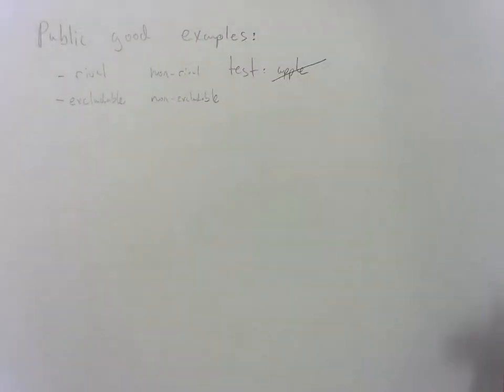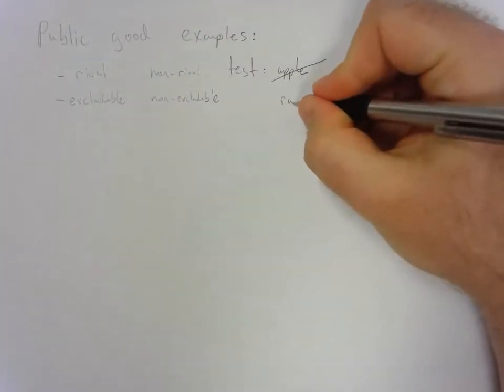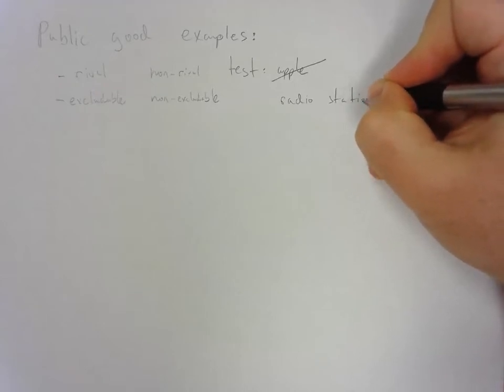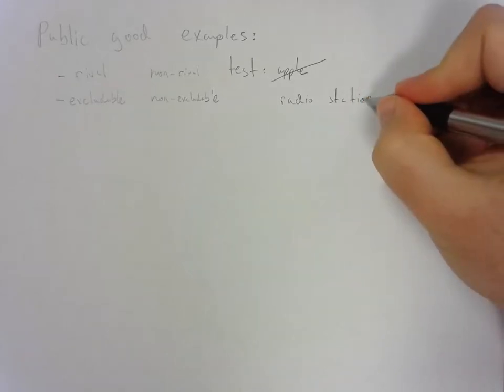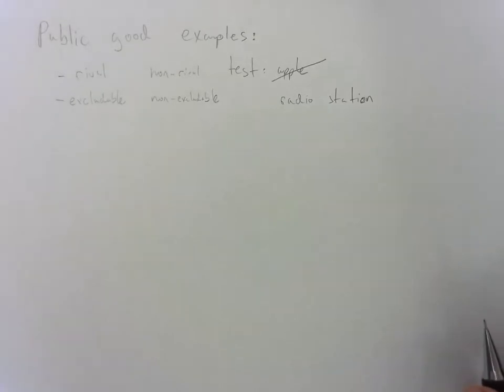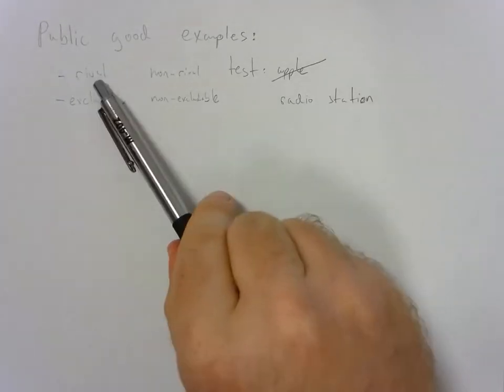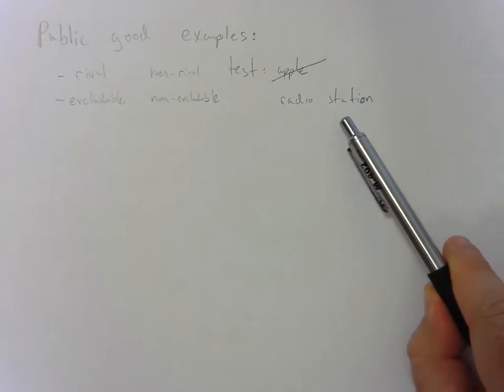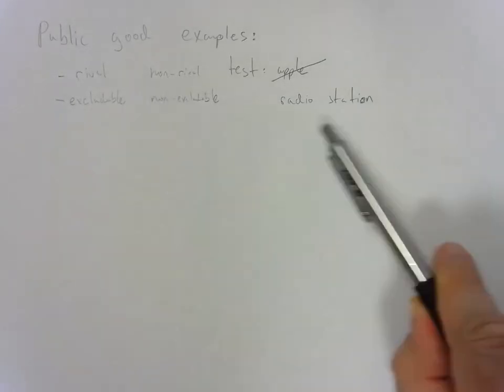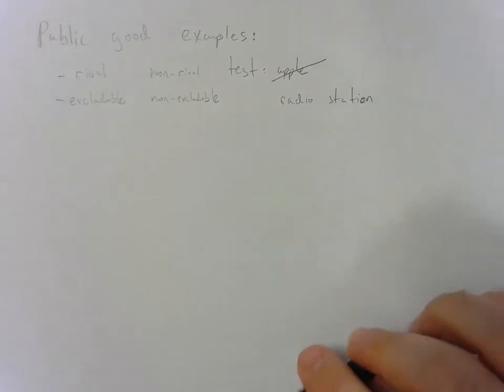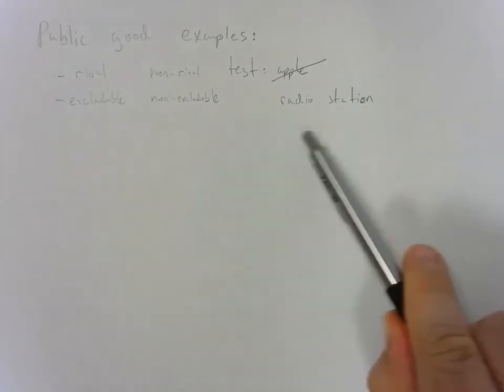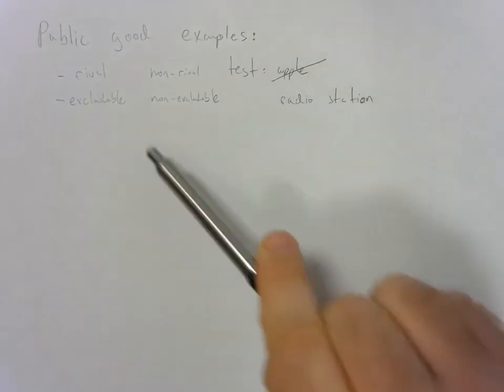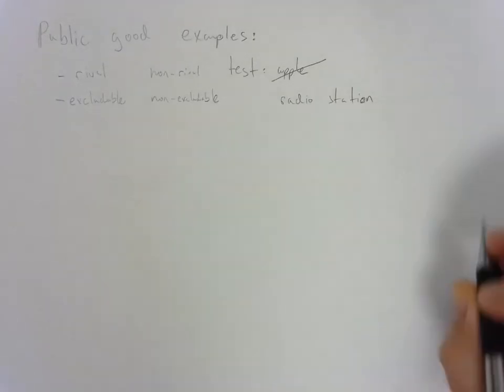So we can look at something like a radio station. Just imagine your favorite radio station, whether they play music or perhaps it's a talk radio station. Is that rival? If somebody's listening to it, does that mean somebody else can't listen to it? The answer to that is no. It's non-rival. As many people can listen as they want to. And is it excludable? Can you exclude people from listening to a radio station? The answer there too is no. It's non-excludable.